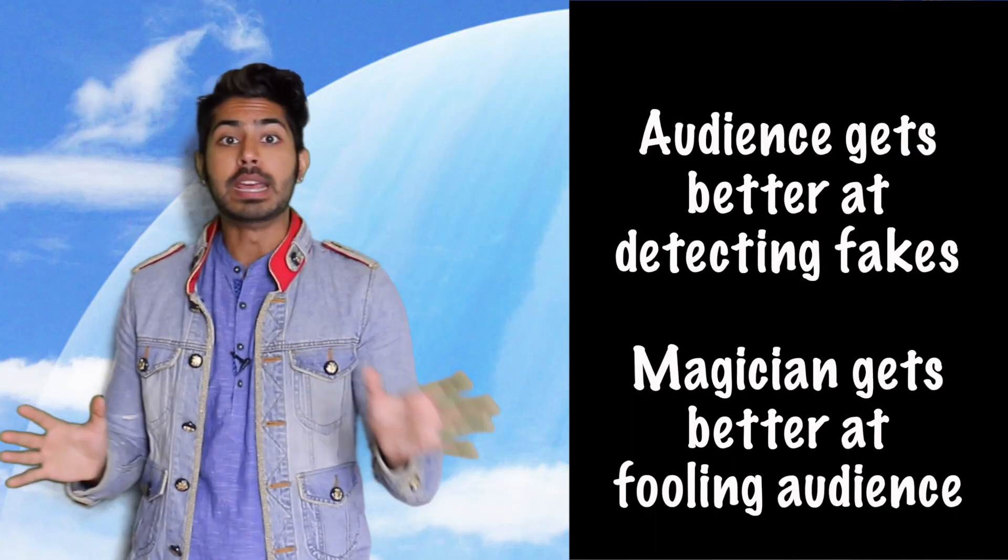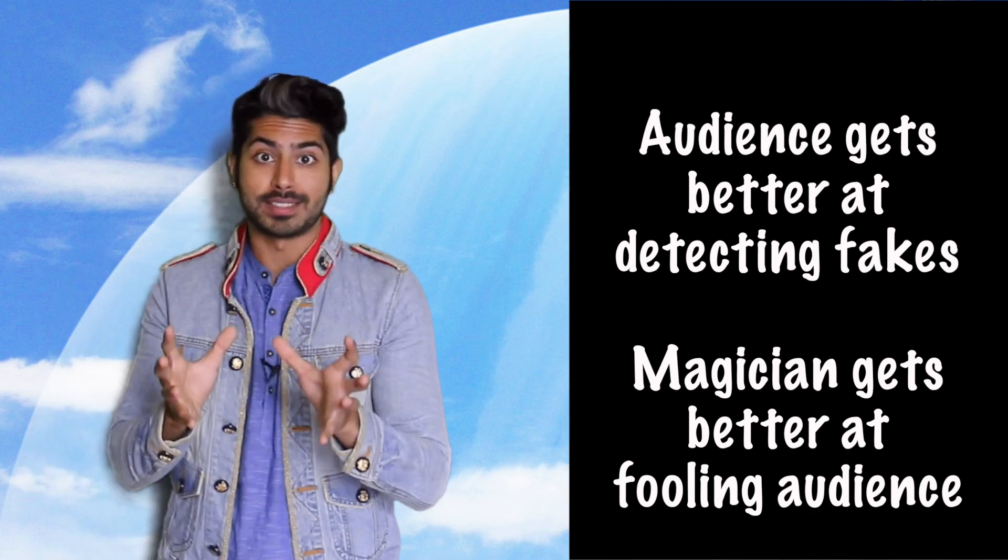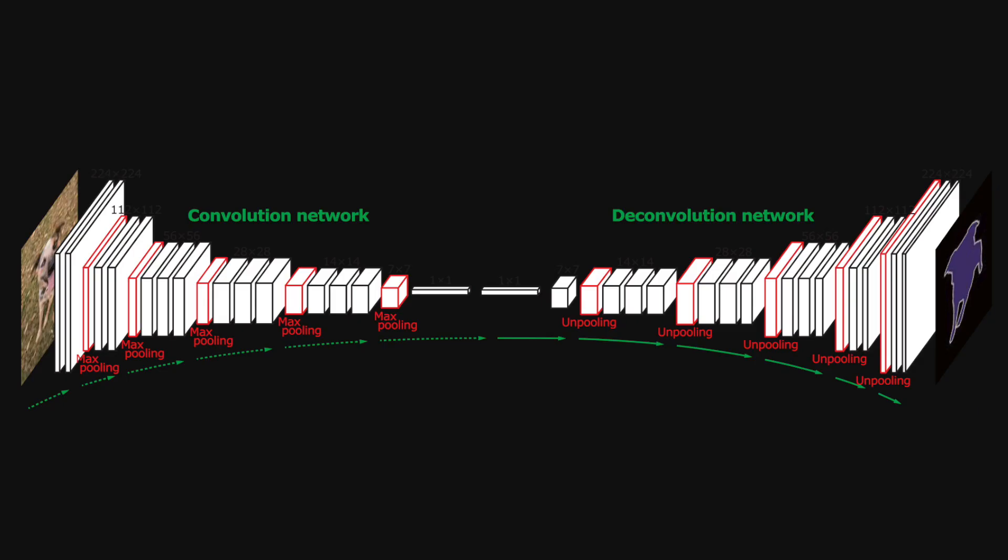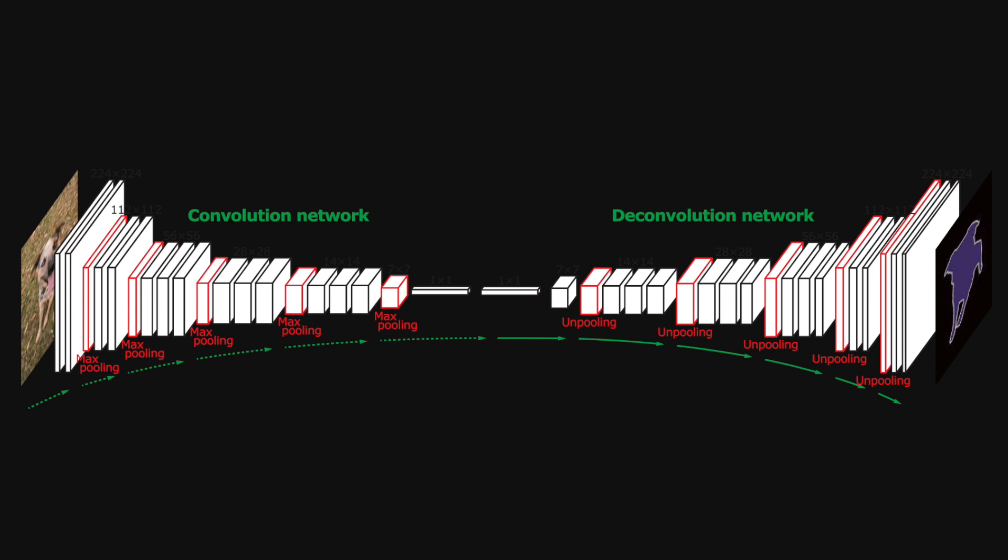They both improve, and in the ideal case, the magician gets so good that no matter what, he is able to fool his audience every time. The type of GAN we'll use in this video is called a deep convolutional GAN, or DCGAN. This is because both D and G are deep convolutional neural nets. So, the discriminator has several layers of convolution, and the generator's got several layers of deconvolution.